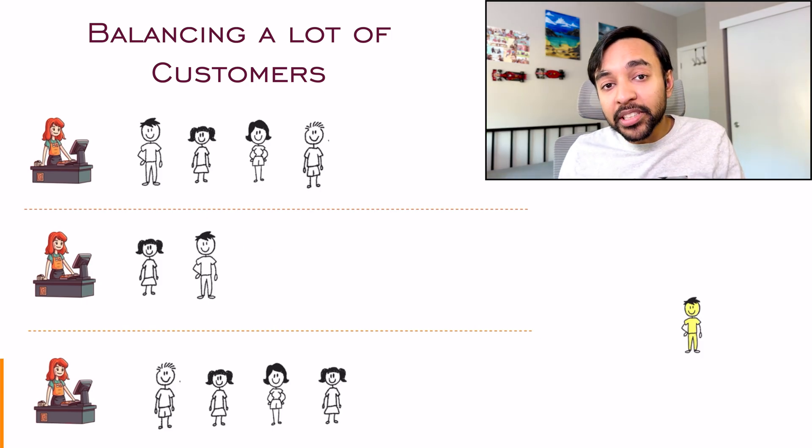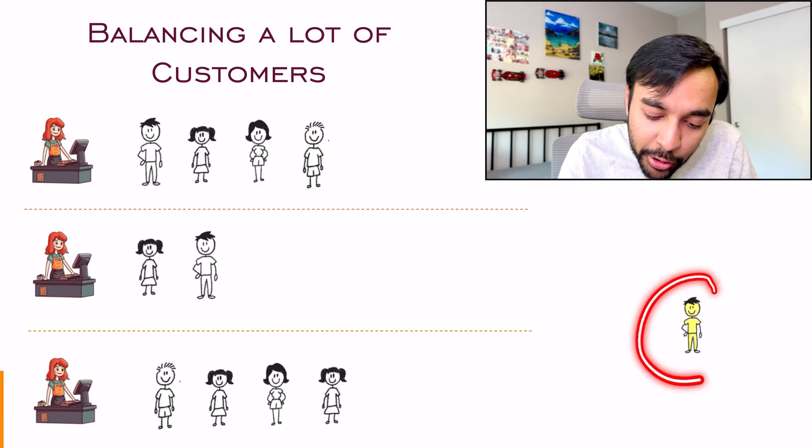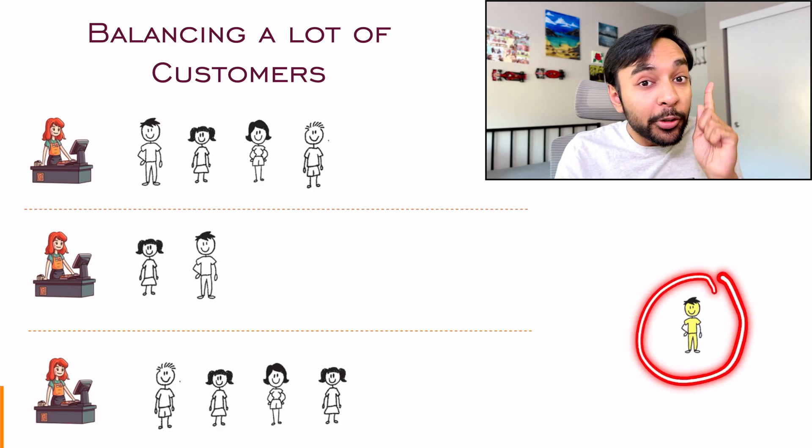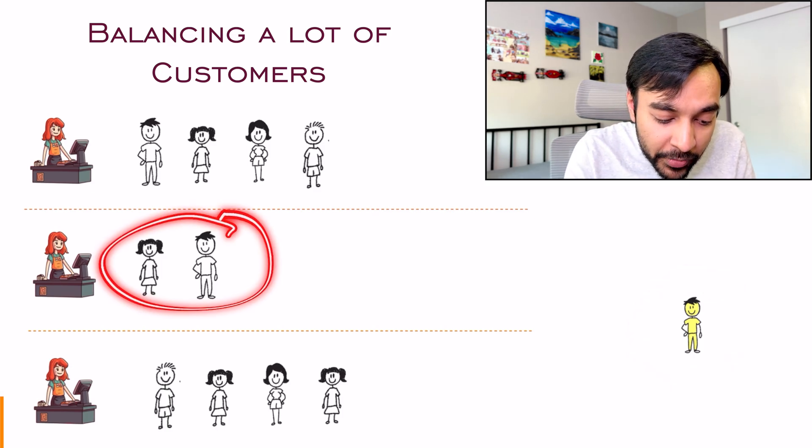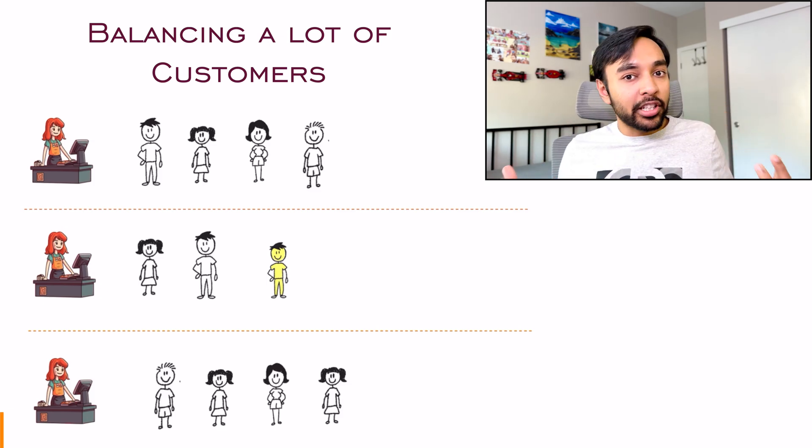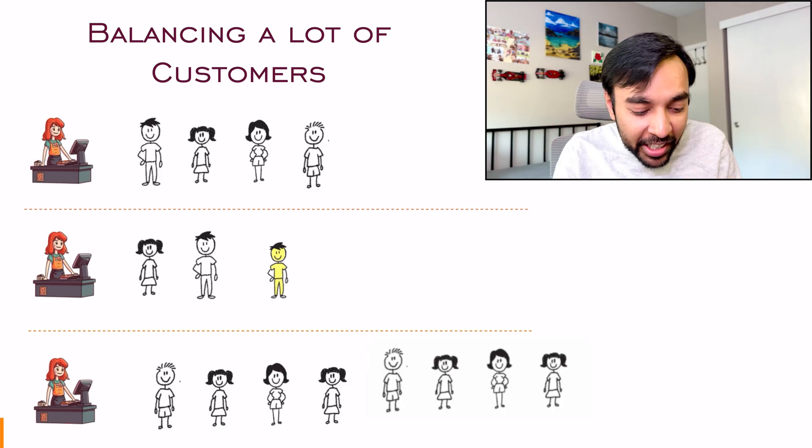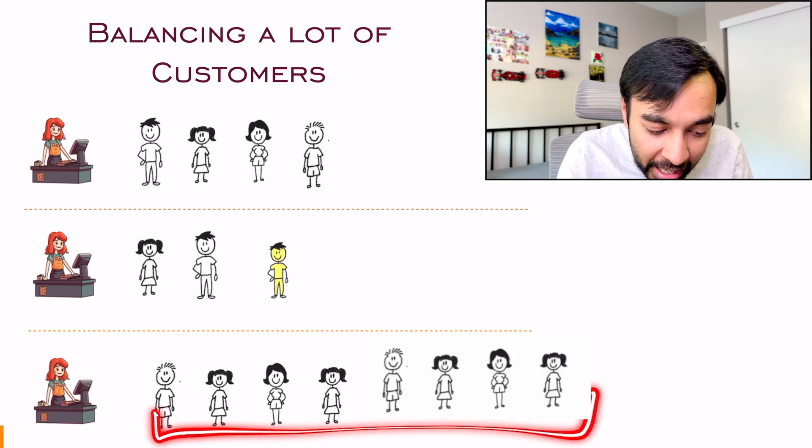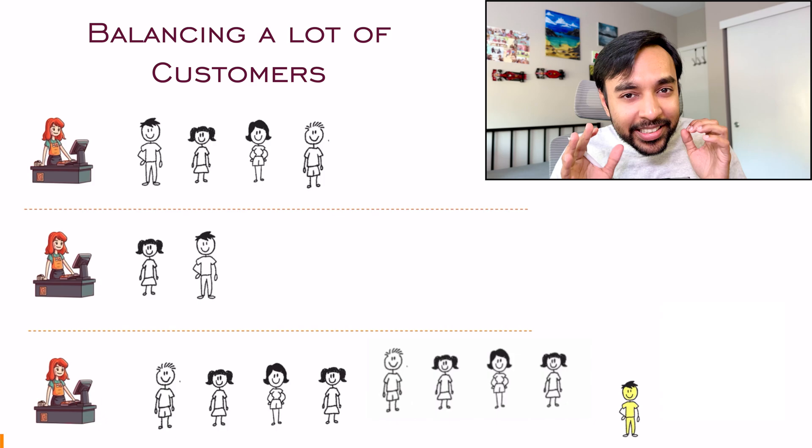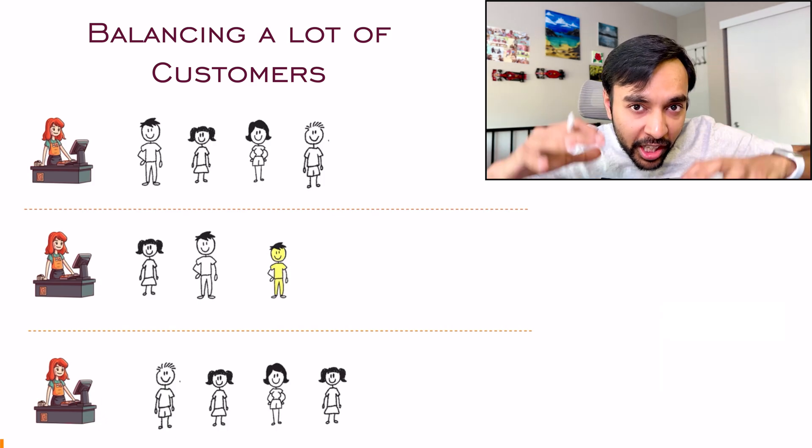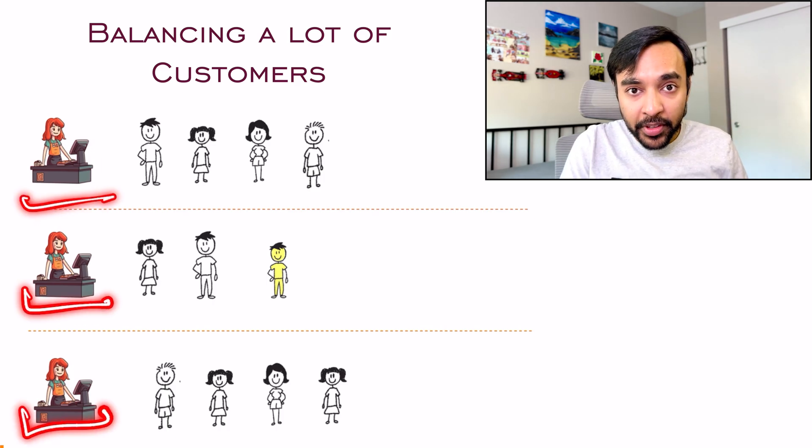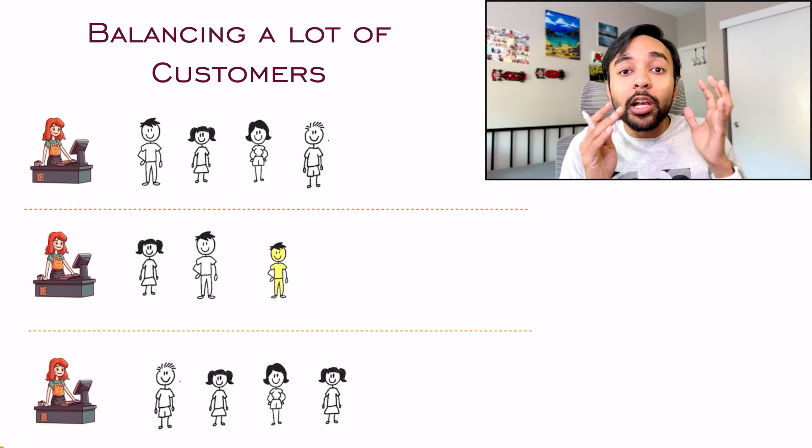Now, what happens when a new customer comes in? Let us say you are done with all your shopping and you want to go to the billing counter. You will choose, okay, this line is the shortest. So you come and you will stand in this line. This is the most natural thing to do. It is very unlikely that a line is so huge and then you come and you stand in this huge line. That usually does not happen. So what are we trying to do over here? We are trying to balance the load at each of the server. So this is called load balancing.